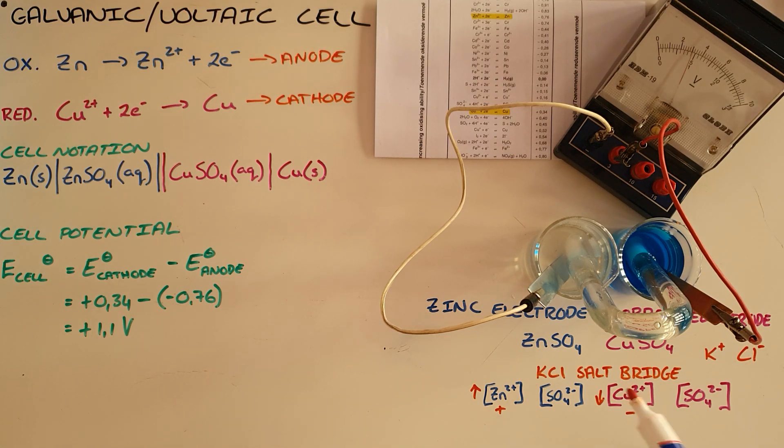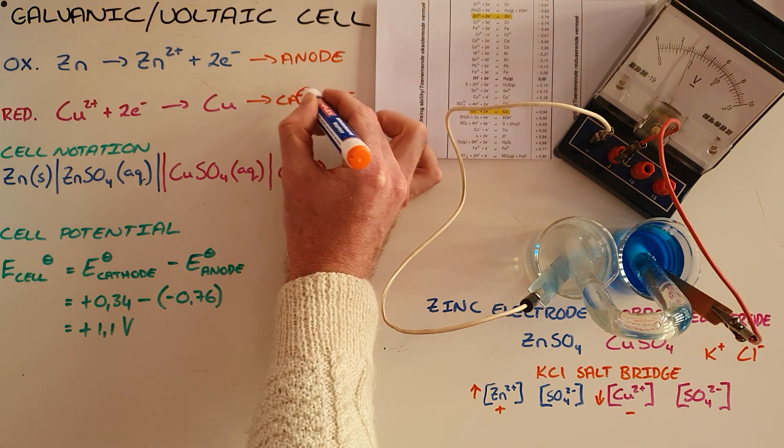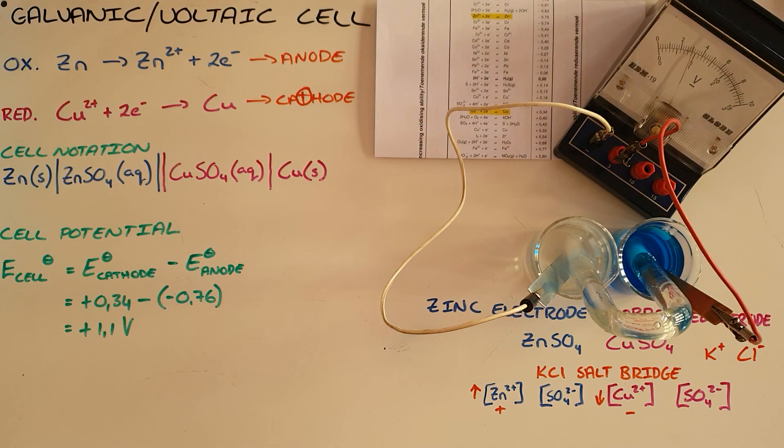And what that allows is for the ions to flow in the direction that maintains electrical neutrality, which is why we say that the salt bridge has two purposes. The first being to maintain electrical neutrality, the second to complete the circuit. We know that the cathode is always the positively charged electrode in a galvanic or voltaic cell, and therefore the anode is negatively charged.